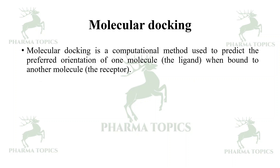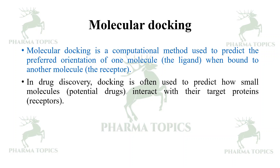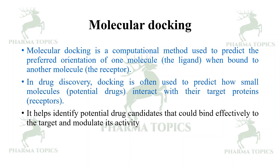Molecular docking is a computational method used to predict the preferred orientation of one molecule — the ligand — when bound to another molecule, which is a larger molecule called the receptor. In drug discovery, docking is used to predict how small molecules, the potential hits, leads, or drugs, interact with target proteins or receptors. It helps to identify potential drug candidates that could bind effectively to the target and modulate its activity.